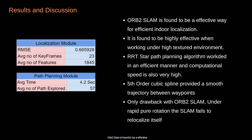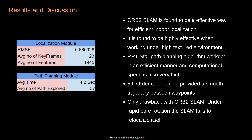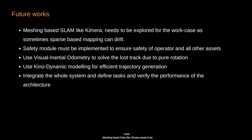ORB2 SLAM is found to be an effective localization technique in indoor environments using a monocular camera. It has low computational requirements and is highly effective in high-textured environments. The only significant drawback is under very fast pure rotation, where SLAM fails to match features and relocalize itself. RRT* and 5th order trajectory planners were found to be an effective solution. Future work includes exploring mesh-based SLAM like CHISEL, implementing a safety module, using visual-inertial odometry to solve tracking loss due to pure rotation, and kinodynamic modeling for efficient trajectory generation.